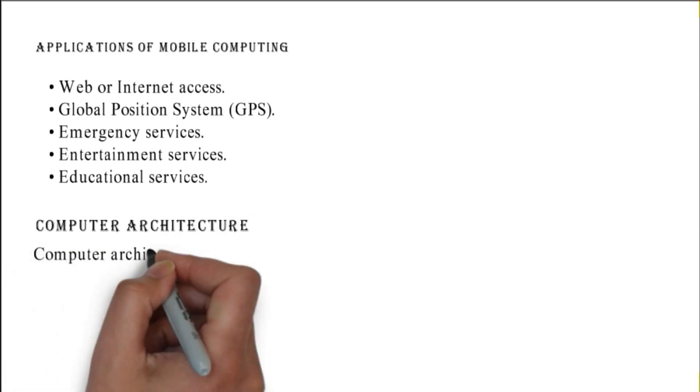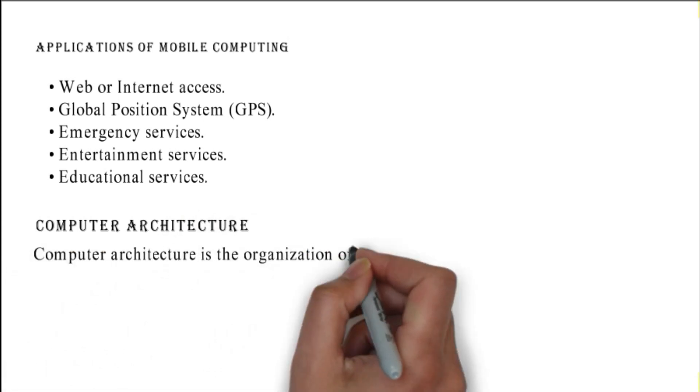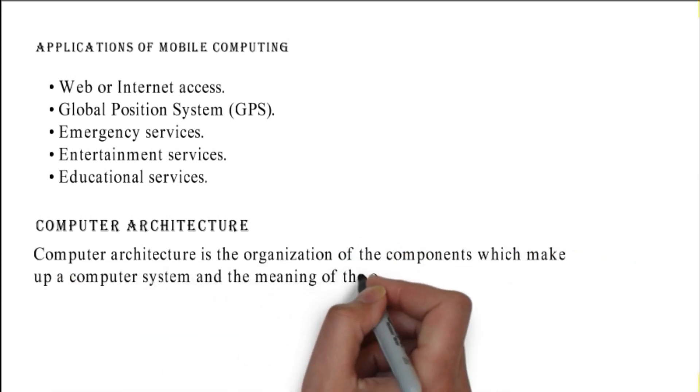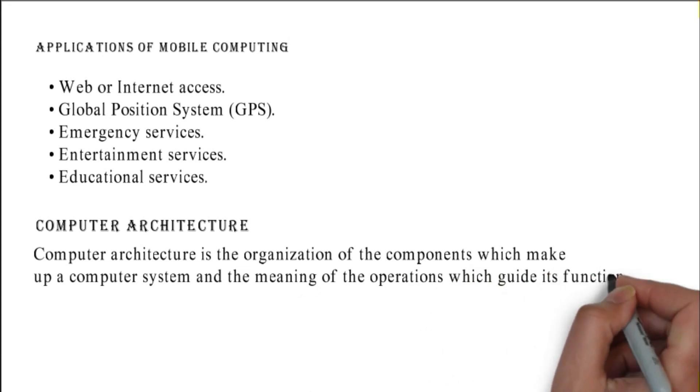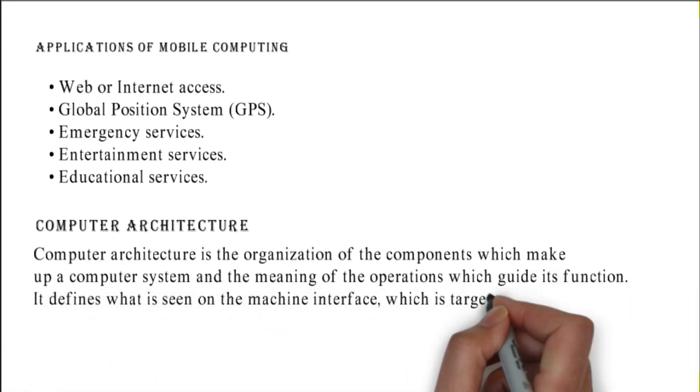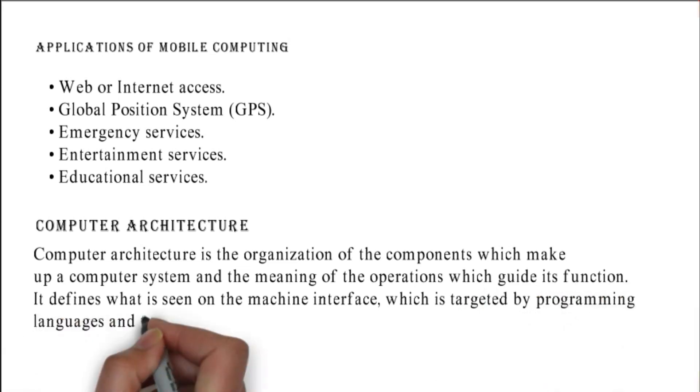Computer architecture: computer architecture is the organization of the components which make up a computer system and the meaning of the operations which guide its function. It defines what is seen on the machine interface, which is targeted by programming languages and their compilers.